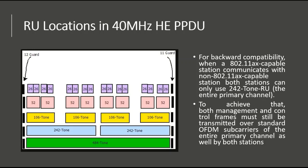These are the RU locations in 40 MHz, shown as an example. For backward compatibility, when an 802.11ax-capable station communicates with a non-802.11ax-capable station, both stations can use a 242-tone RU — that is the entire primary channel. To achieve that, both management and control frames must still be transmitted over standard OFDM subcarriers across the entire primary channel. That's all from my side — thank you so much. Questions and comments are always welcome. Bye-bye.